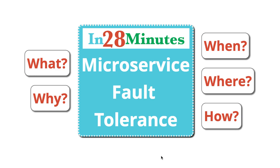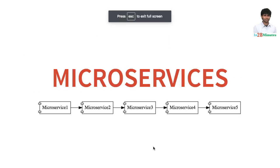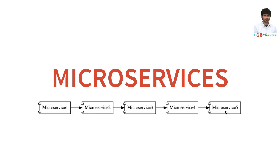In this video we would be talking about one of the most important characteristics of microservices called fault tolerance. One of the important things about microservices is the fact that they have to be extremely reliable. Because in microservices architectures we would be building a number of small microservices and there is a lot of communication happening between them. So let's say if microservice 5 is down, what would happen?